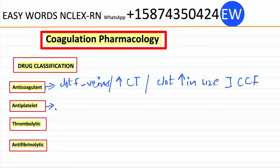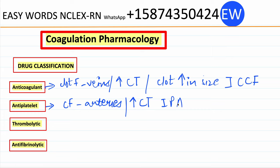Next we have antiplatelets. Antiplatelets also prevent clot formation especially in the arteries. They also increase the clotting time by inhibiting platelet aggregation. Next we have thrombolytics. Thrombolytics help in the removal of an existing clot.